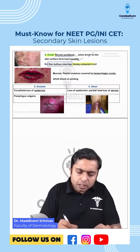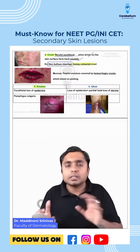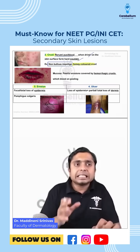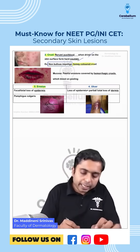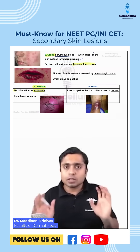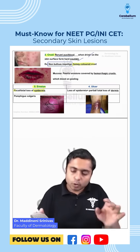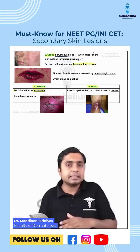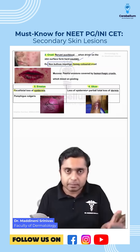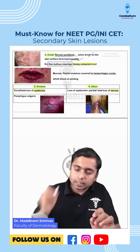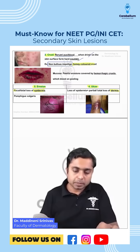Next is erosion. Erosion is nothing but a clinical term to explain that there is loss of epidermis — a focal or total loss of epidermis. The deeper variant of erosion is an ulcer, where there is loss of epidermis but also a loss of dermis.